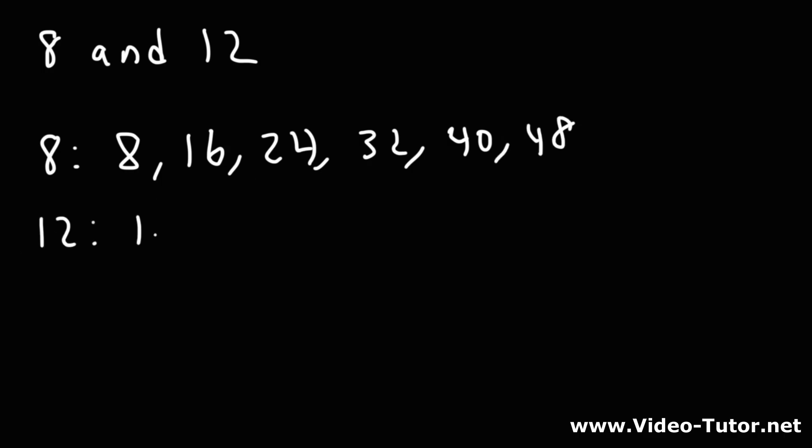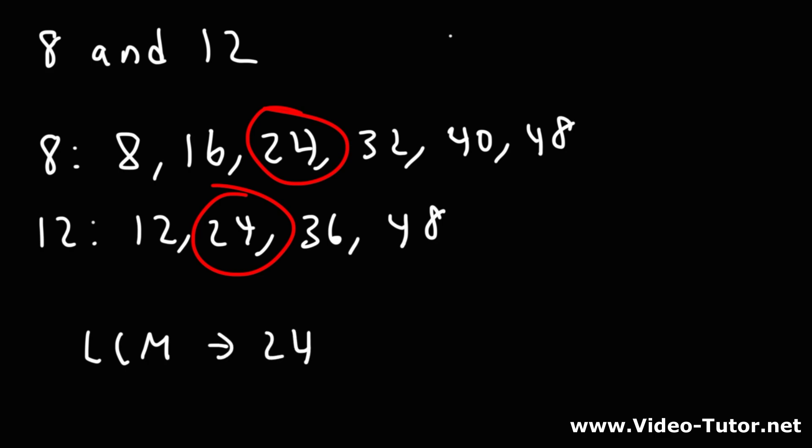Multiples of 12 are 12, 24, 36, 48. So immediately we could see that 24 is going to be the LCM of 8 and 12. 8 times 12 is 96. So that multiple is pretty far off. But 24 is going to be the LCM, the least common multiple that we're looking for.